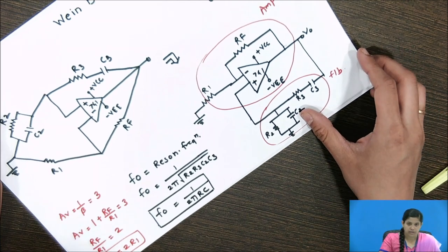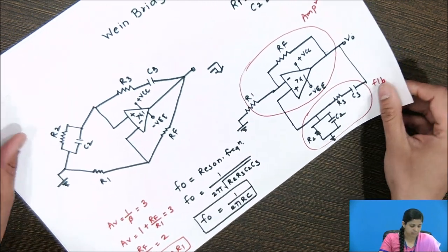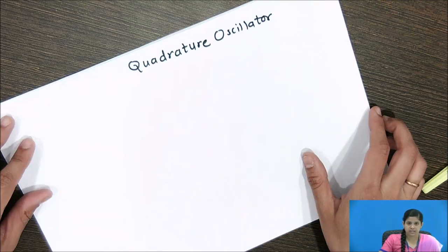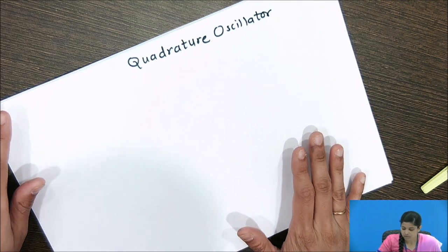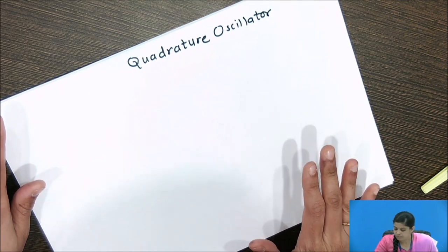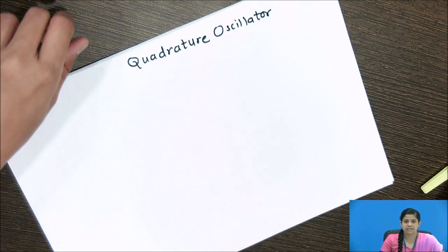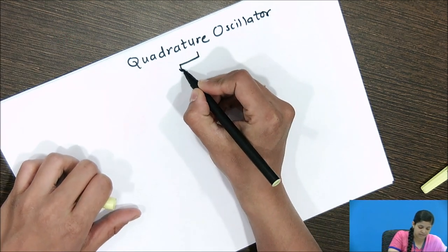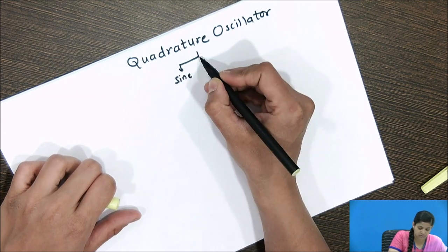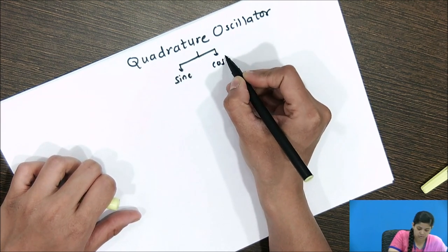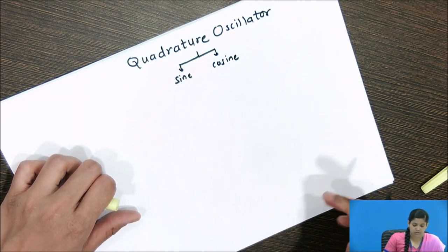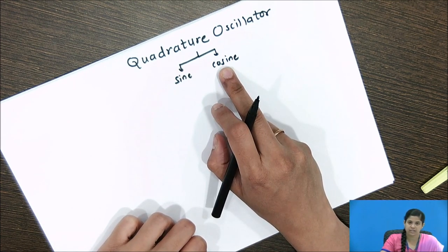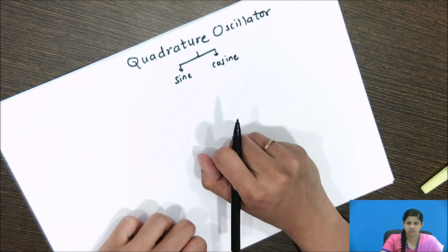Now let us see about the quadrature oscillator. The quadrature oscillator is the second circuit and it produces both a sine wave as well as a cosine wave, so it has two outputs. The phase difference between these two outputs is 90 degrees, which is why it is called a quadrature oscillator.